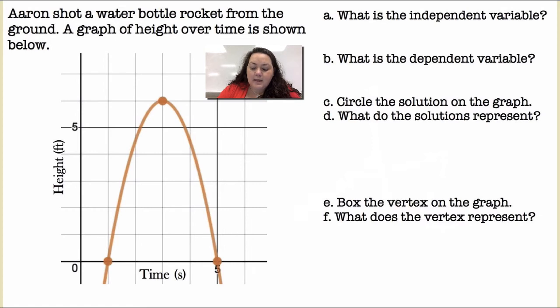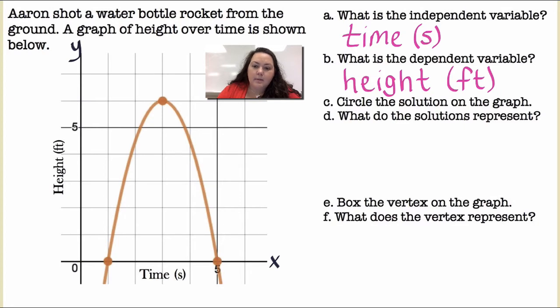Alright, what is the independent variable? Okay, so we have x and y. I'm going to label my graph. Time, usually in most cases your x-axis, that variable on your x-axis, is going to be your independent variable. Okay, and then your dependent variable is going to be the one on your y-axis, typically. Okay, so the height depends on the amount of time that goes by. Okay, so height is dependent.